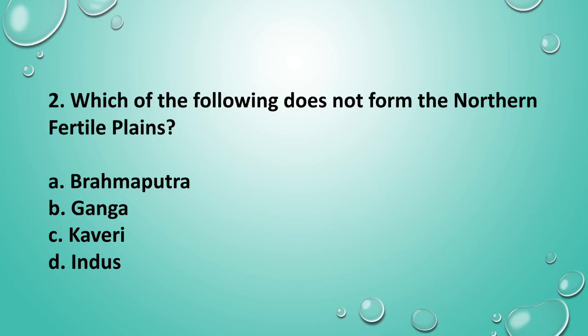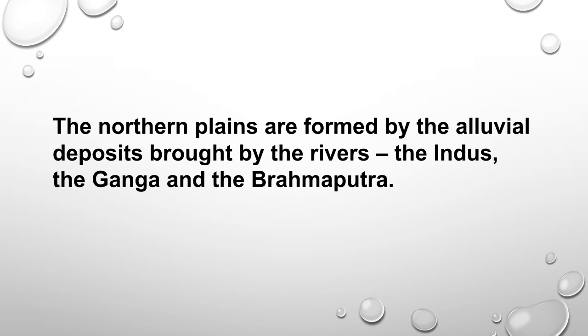Question 2: Which of the following does not form the northern fertile plains? The answer is option C, Kaveri. The northern plains are formed by the alluvial deposits brought by the rivers — the Indus, the Ganga, and the Brahmaputra.